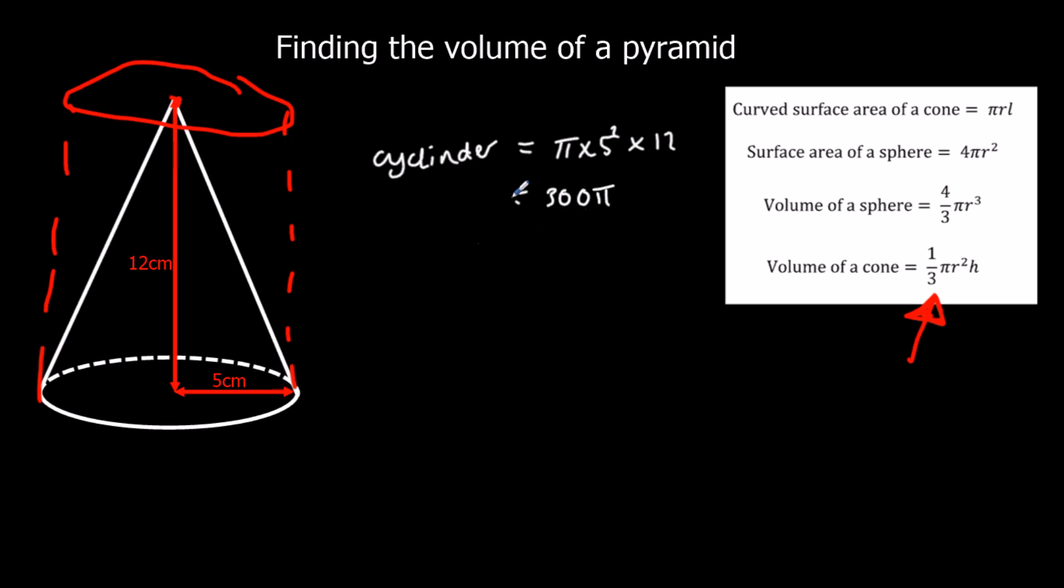For a cone, we'd just do one third of that. So it's one third of 300 pi, which is 100 pi. So the volume of the cone is one third the volume of the cylinder. In the same way the volume of the square-based pyramid is one third the volume of the cuboid.